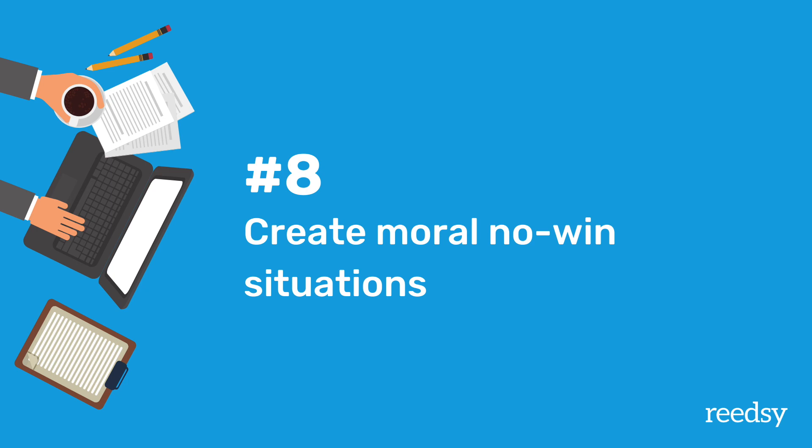And finally, tip number eight is to put the character in moral no-win situations. This is similar to making them face a sacrifice, but specifically a situation where a character has to make a choice and both choices involve some aspect of immorality that actually challenges them. A classic example is the trolley problem in philosophy — would you kill one person to save five others? These kinds of moral no-win situations can be really powerful in fiction and they force your character to reveal and face the emotional stakes. Putting a character's core values and morals on the line is really high emotional stakes, especially when there is no clear right or wrong. They're going to have to make some kind of moral sacrifice and face emotional or moral fallout no matter what they do.